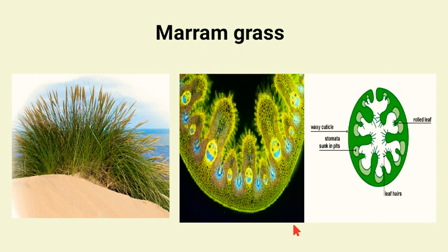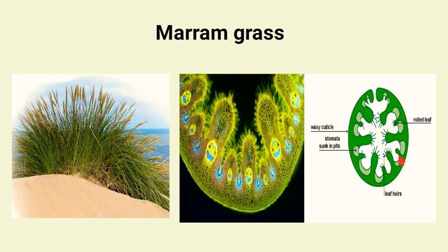We have an example of marram grass here. As you can see in the picture, these are transverse sections of the leaf of marram grass. Marram grass has a thick cuticle, stomata sunken in pits, rolled leaves, and leaf hairs are present. These leaf hairs conserve water.